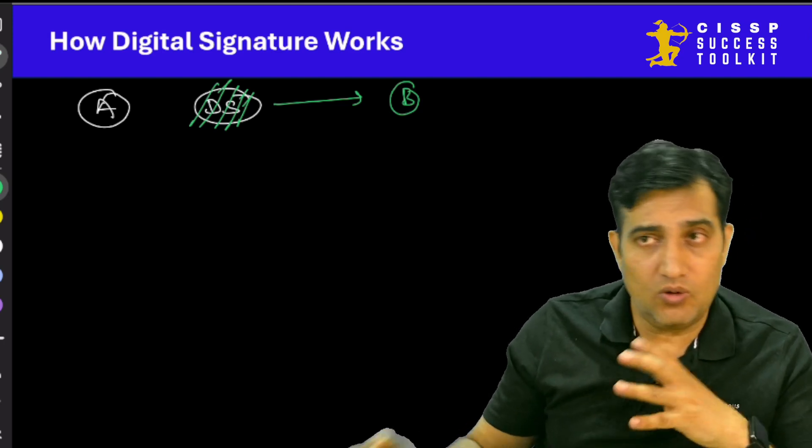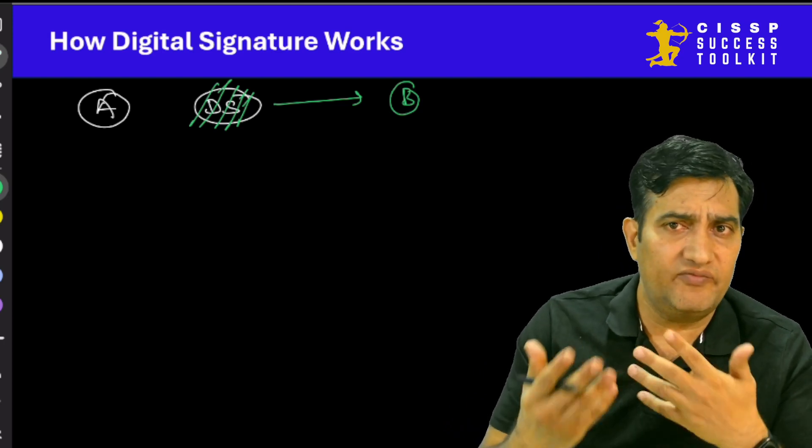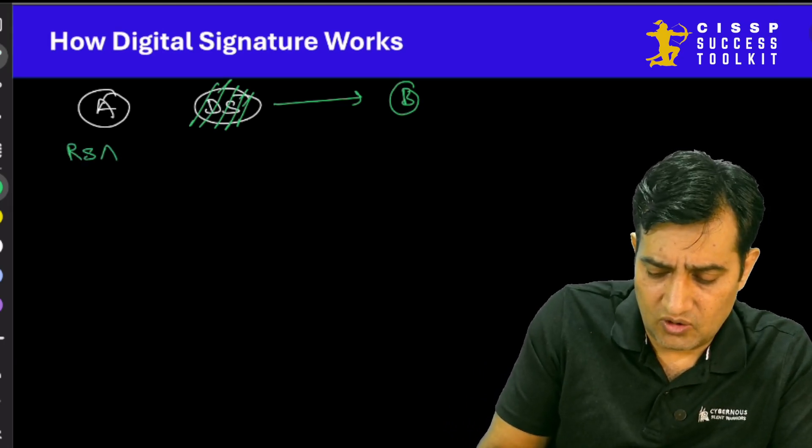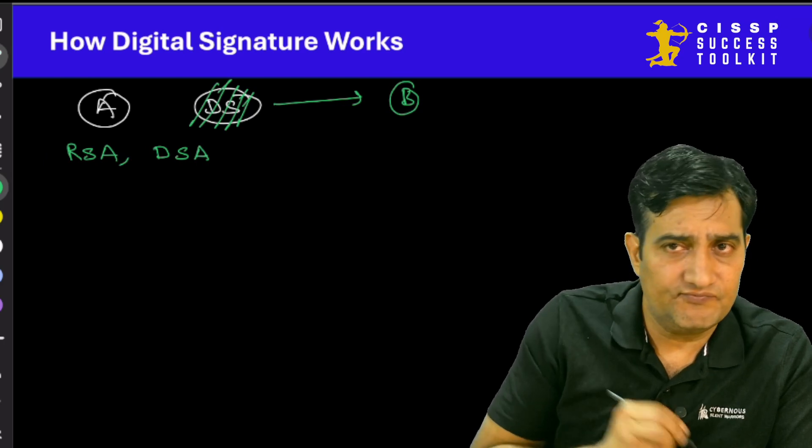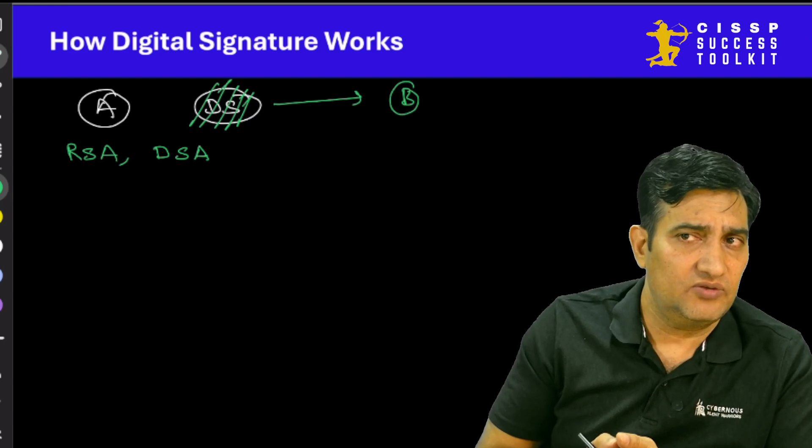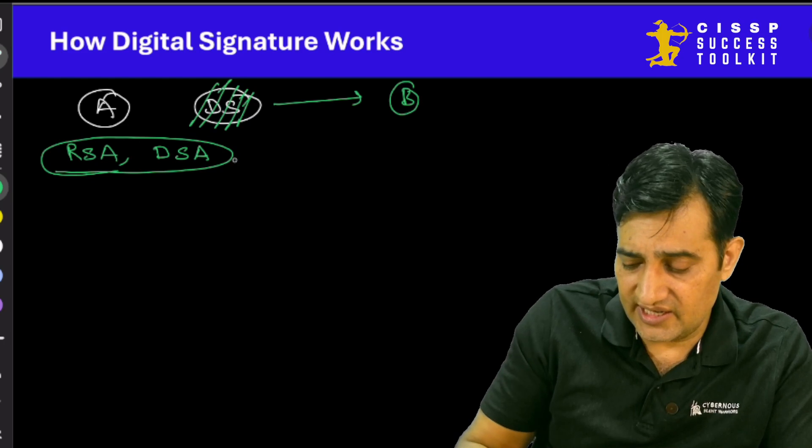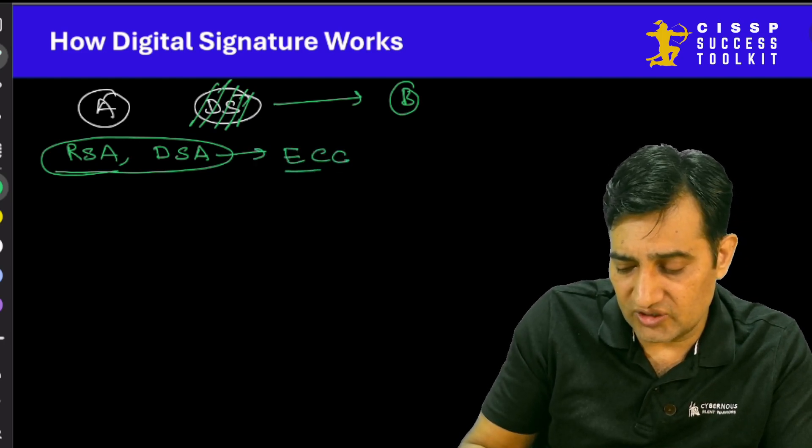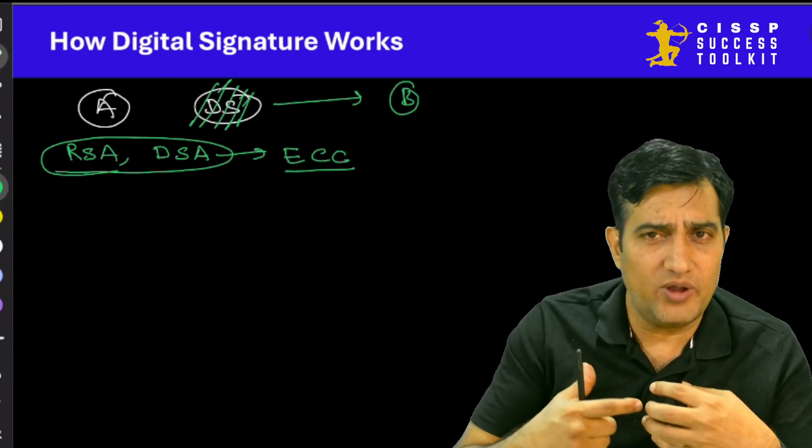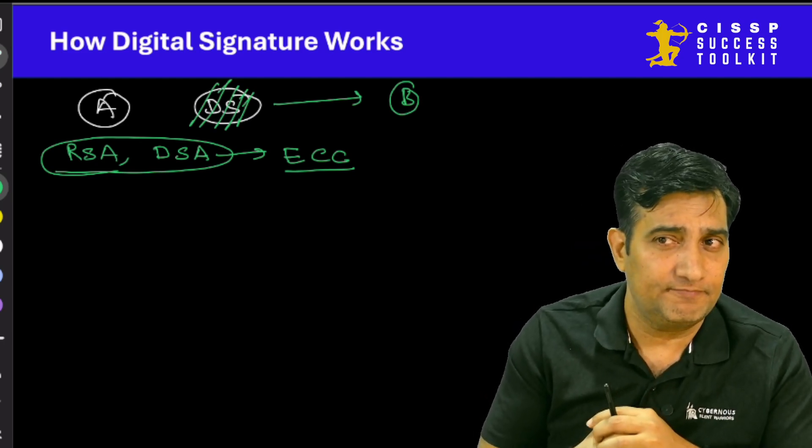Now, in real world, whenever we use digital signatures, what all different algorithms we normally use? Either we use RSA or we use DSA. DSA is digital signature algorithm. These are the very common ones. But nowadays, even ECC has started being used because this is much more lightweight and it can also be much better for devices who have a very low processing capability as well. So we also start using it.